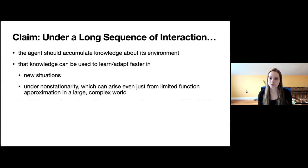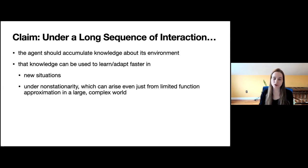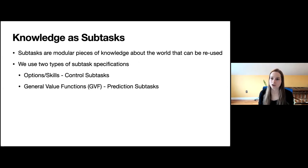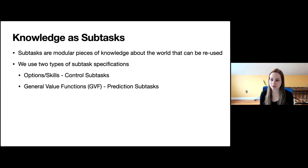Under a long sequence of interaction, our agents should accumulate knowledge about their environment, because that knowledge will help them learn and adapt faster in new situations or under non-stationarity. We're going to encode this knowledge as subtasks — modular pieces of knowledge about the world that we can reuse. We'll look at two specific types of subtasks: options or skills, which are control subtasks, and general value functions, which are prediction subtasks.